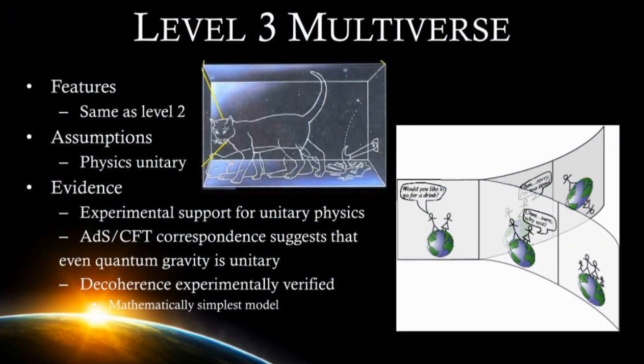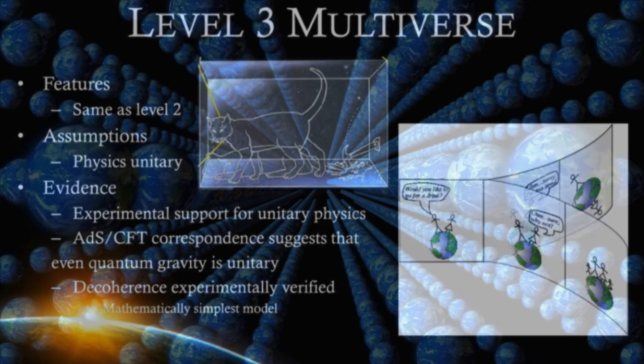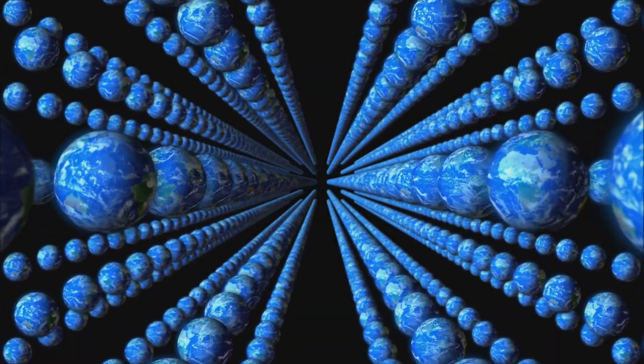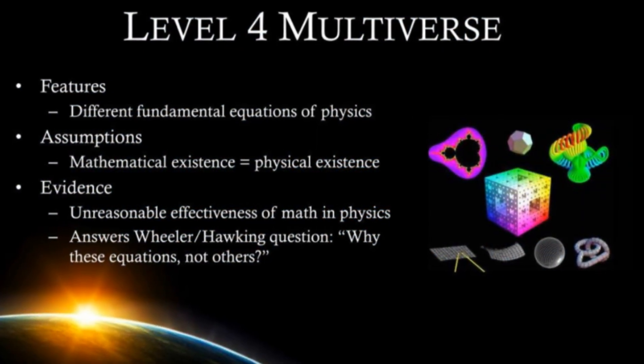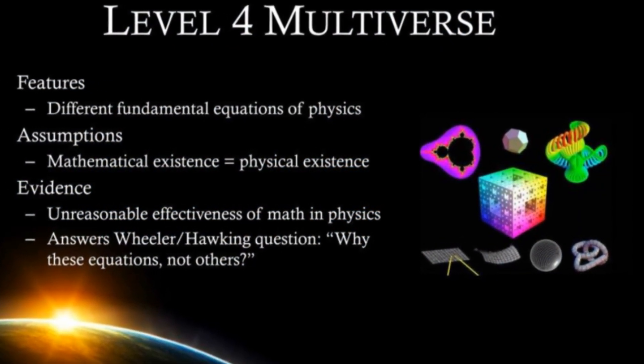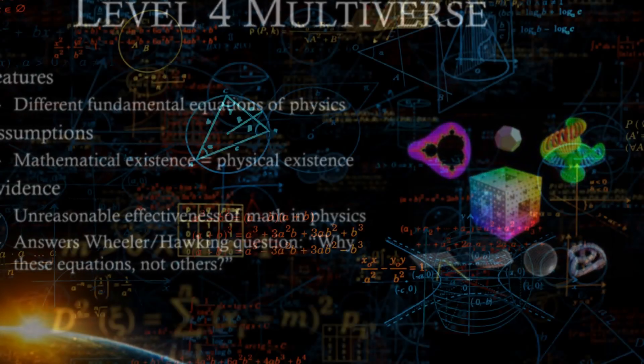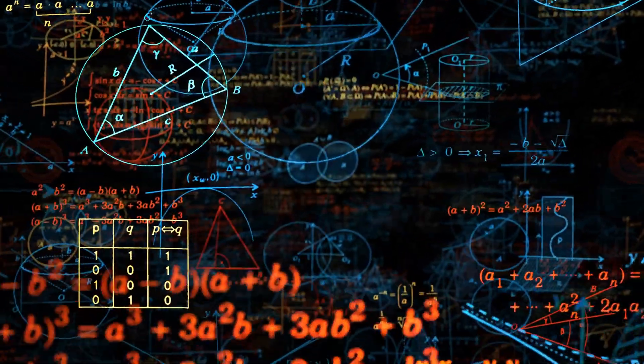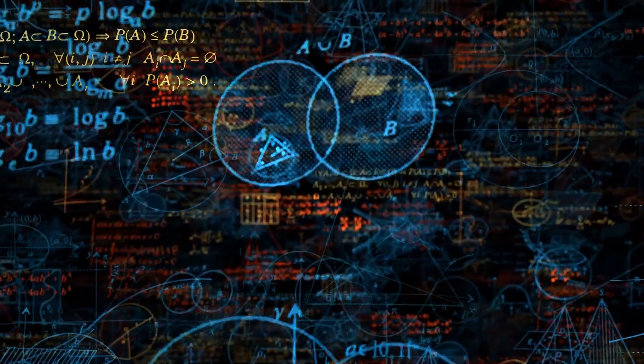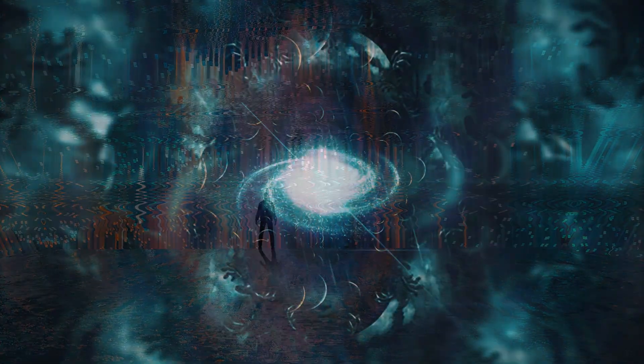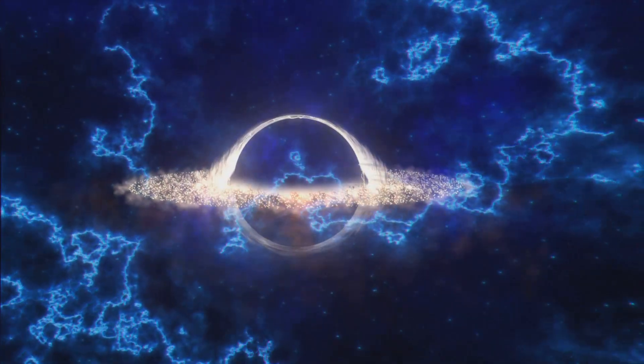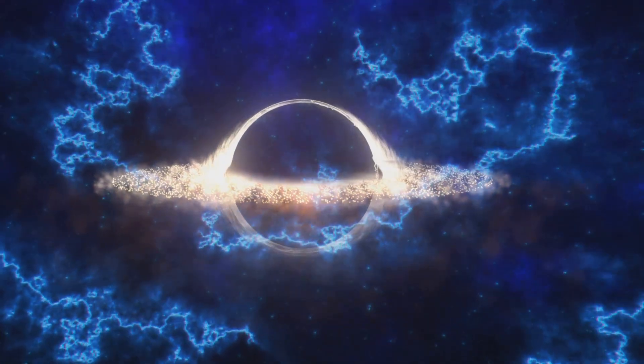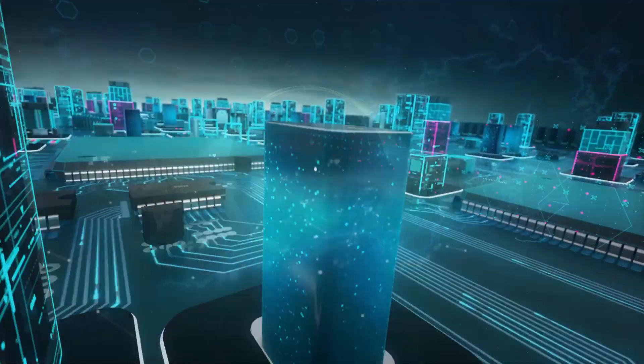Level 3: the many worlds of quantum mechanics, every possible event creating new branches of reality. Here, every coin flip and every photon's path spawns another timeline. Level 4: the mathematical multiverse, where every possible equation, every consistent mathematical structure, defines its own reality. In that sense, numbers themselves give birth to universes. Beyond that, ideas only get stranger: a mirror universe where time runs backward, a dark parallel world connected only by gravity, and black holes that might be gateways, each collapse birthing a new universe inside.